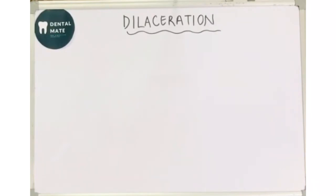I hope you are now clear how to differentiate between gemination and fusion clinically, and also we have covered concrescence. Now let's talk about dilaceration. The word dilacerate actually means to tear apart.